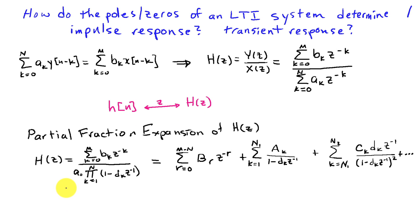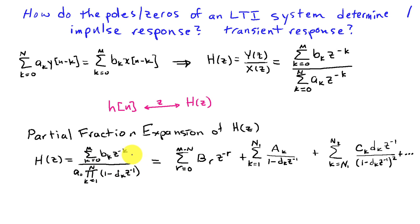So if I take H(z), the system function, and try to invert it — this is as a ratio of polynomials in z-inverse — we're going to use a partial fraction expansion. I can write the denominator of H(z) as a coefficient a_0 times a product from k equals 1 to n of (1 minus d_k z^{-1}), so the d_k are the poles of the system. If m is greater than or equal to n, we have to do long division so that the numerator order is less than the denominator order, giving a term that's the sum from r equals 0 to m minus n of b_r z^{-r}.